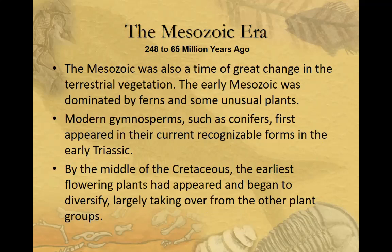It's important to highlight plants during the Mesozoic. The early Mesozoic is dominated by huge fern forests and unusual plants whose closest living relatives are horsetails. During this time we see the rise of modern gymnosperms — conifers and similar plants — appearing in recognizable form around the Triassic. By the middle of the Cretaceous, we have our first flowering plants: grasses and trees. These angiosperms diversified tremendously and now make up the vast majority of plants on our planet.